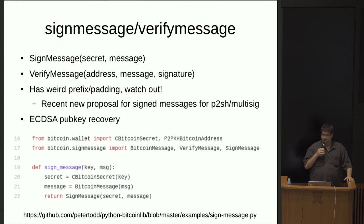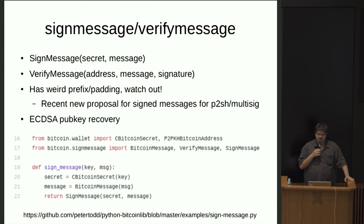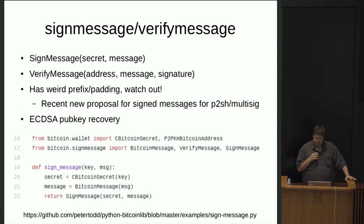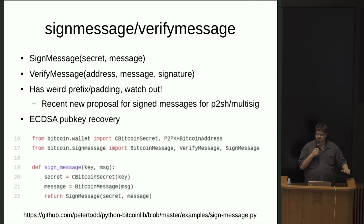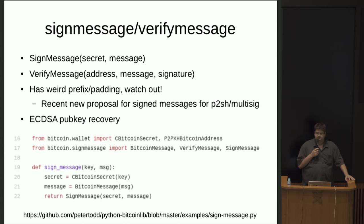Another useful thing is sign message and verify message. This is very useful for audits or proving that you have control over a certain key. It's not just signing a message or a hash directly — there's a weird prefix, but that's a Bitcoin Core thing. Having a prefix makes sense because otherwise, if you ask a user to sign a message to prove control, it could actually be a transaction that sends all their coins to an attacker. So the prefix prevents that attack.